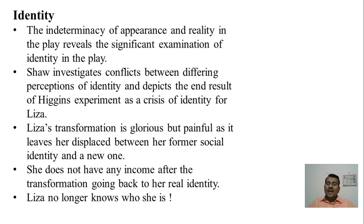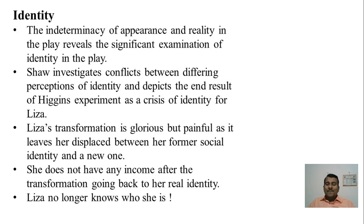Neither can she go back to being a flower seller, nor can she place herself comfortably in the upper or higher class. She does not have any income after the transformation. Lisa no longer knows who she is — this is an identity crisis. Ultimately, she reclaims her identity by marrying Freddie, even though she despises selling herself by marrying a rich man as suggested by Mr. Higgins. She finds her real self and one who loves her for her reality.